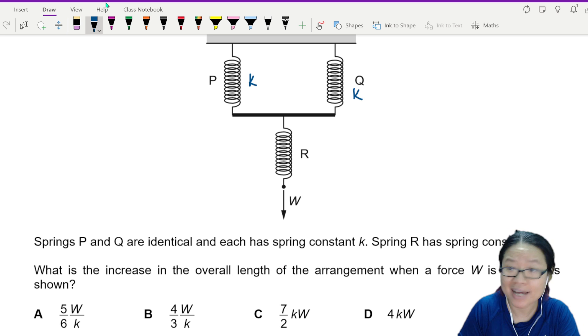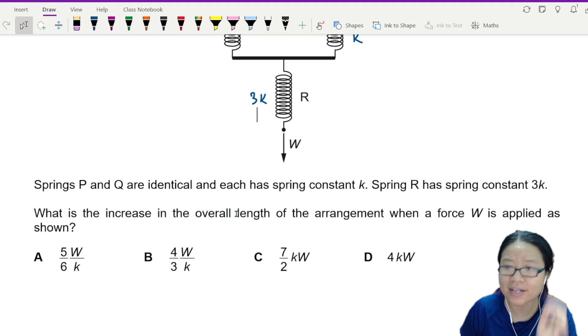Spring R has a spring constant of 3K. What is the increase in the overall length of the arrangement when force W is applied as shown?